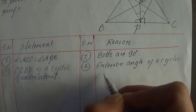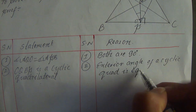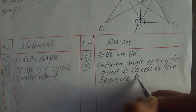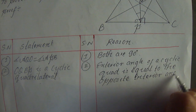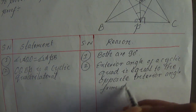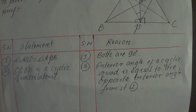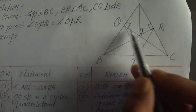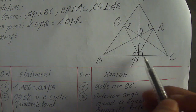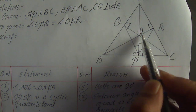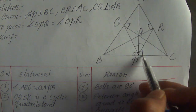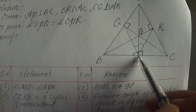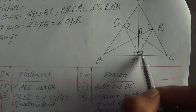Reason: exterior angle of a cyclic quadrilateral is equal to the opposite interior angle — from statement number one. OQBP is a cyclic quadrilateral. Also, OCBB or OCBP is a cyclic quad. The exterior angle — angle ARB — and angle 90 degrees as the exterior angle equals the interior angle.